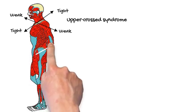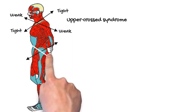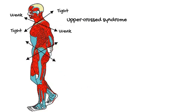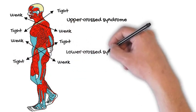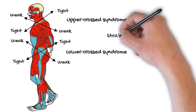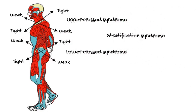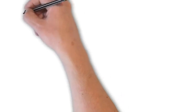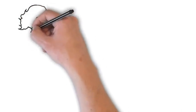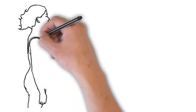Although not the subject of today's video, this pattern can continue into or be isolated in the lower body. When isolated in the lower body, it is called lower-crossed syndrome. When found in the upper body and lower body, it is called stratification syndrome. Now that we have a basic idea of what upper-crossed syndrome is, let's take a look at what causes it.